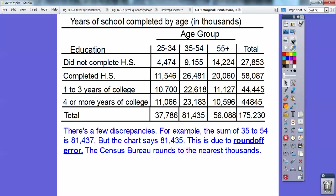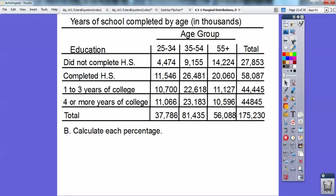the sum of 35 to 54 is actually 81,437,000, but the chart comes up to 81,435,000. When you're talking in millions, and they're rounding in thousands, you're going to have this thing called round off there. So that's what's happening with the different discrepancies in numbers. Okay, so let's calculate each percentage.